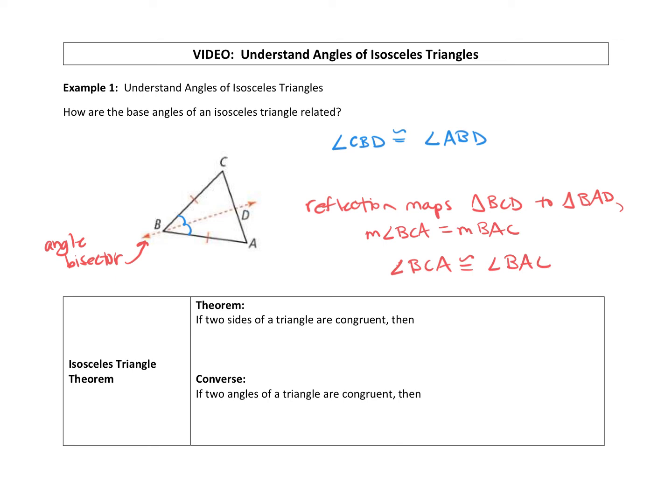So in the picture, let's just find those angles. BCA is that angle and BAC is this angle.